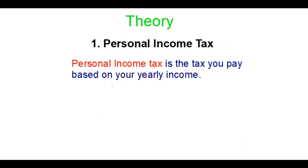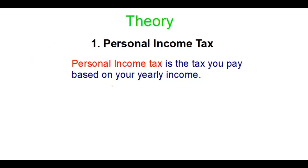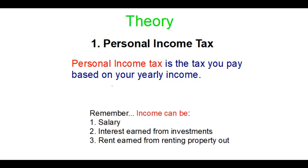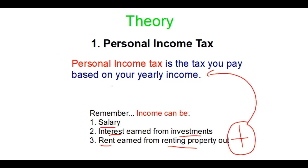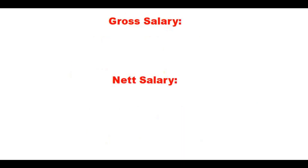Let's go through the theory. Personal income tax is basically tax that you pay based on your income. There are different types of taxes — VAT, and businesses have their own type of tax. If you get a salary, that's one way. If you invest money and earn interest, you pay tax on that. If you have properties that you're renting out, you also pay tax on that. All of this combined gives you a yearly income.